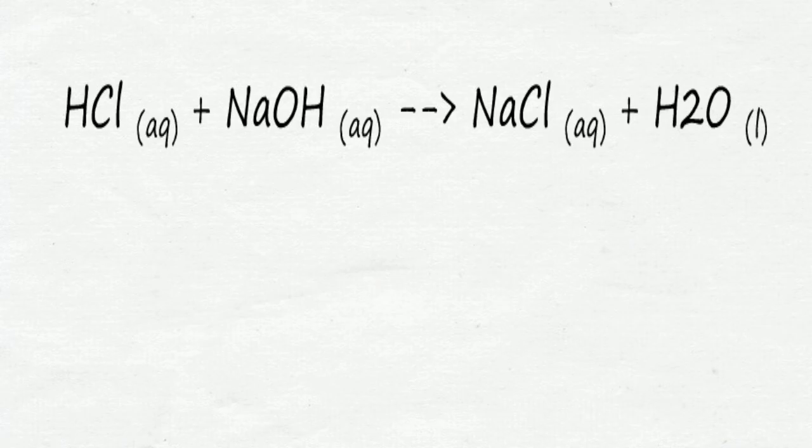Let's look at this chemical equation. The ones in the brackets are state symbols. The state symbol AQ means the substance is in aqueous state. This means the substance is dissolved in water to form solution.